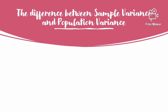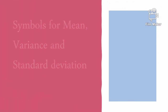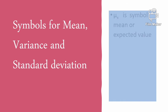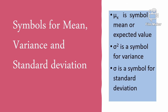The difference between sample variance and population variance. In sample, the notation is S-squared. The summation symbol is used. The symbol for mean is mu (μ), the symbol for variance is sigma squared (σ²), and the symbol for standard deviation is sigma (σ).